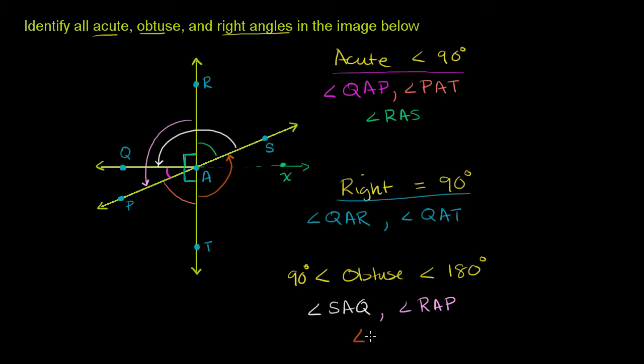And the reason why we know it's more than 90 degrees is, once again, if you had this mythological point X over here, that was just, if you were to continue QA in this direction, we would know that this is a 90 degree angle, and TAS is opening up more than that 90 degree angle. So TAS is also obtuse, and I think I got all of them now. So let me see, I think that is all of them. Yep, we're done.